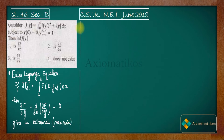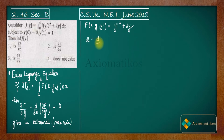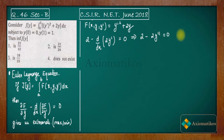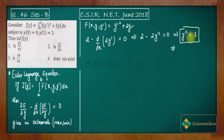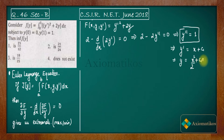Our f(x, y, y') is y' squared plus 2y. Applying the Euler-Lagrange equation gives us 2 minus d/dx(2y') = 0, which means 2 minus 2y'' = 0, so y'' = 1. Integrating once: y' = x + c₁. Integrating again: y = x²/2 + c₁x + c₂.